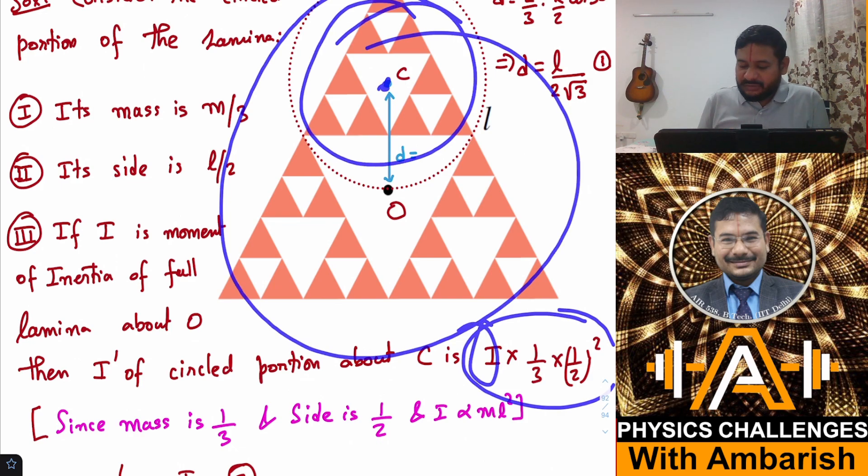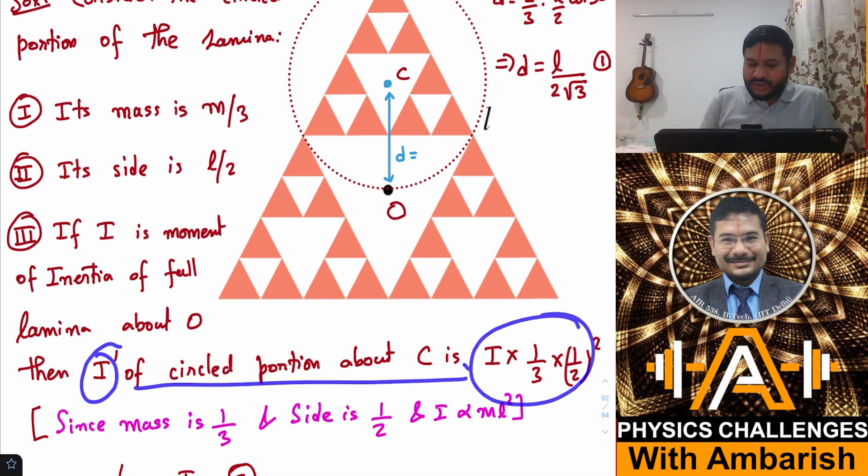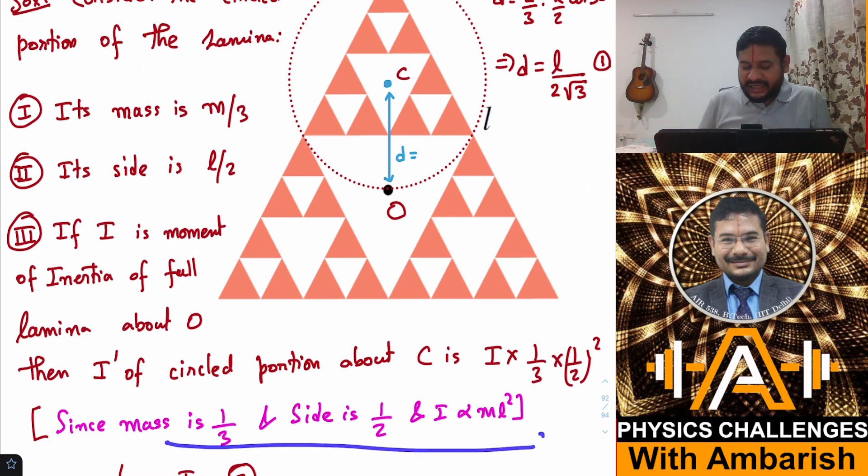If the original moment of inertia of the entire thing is I, then moment of inertia of this part about C must be I times 1/3 for the mass factor and 1/4 for the linear dimension factor. I hope this is clear.